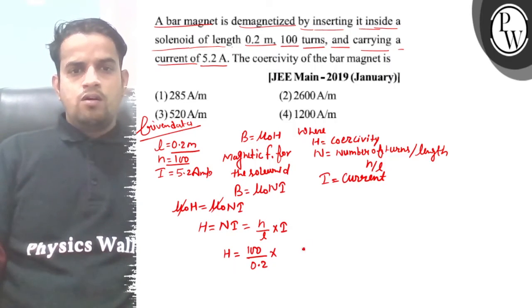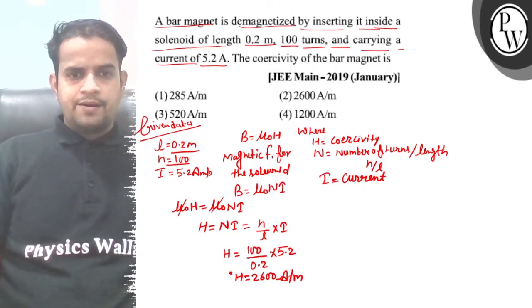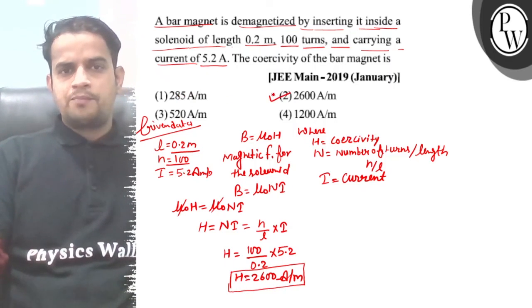i equals 5.2, so H equals 2600 amperes per meter. This means your correct answer is 2600, which is option 2.